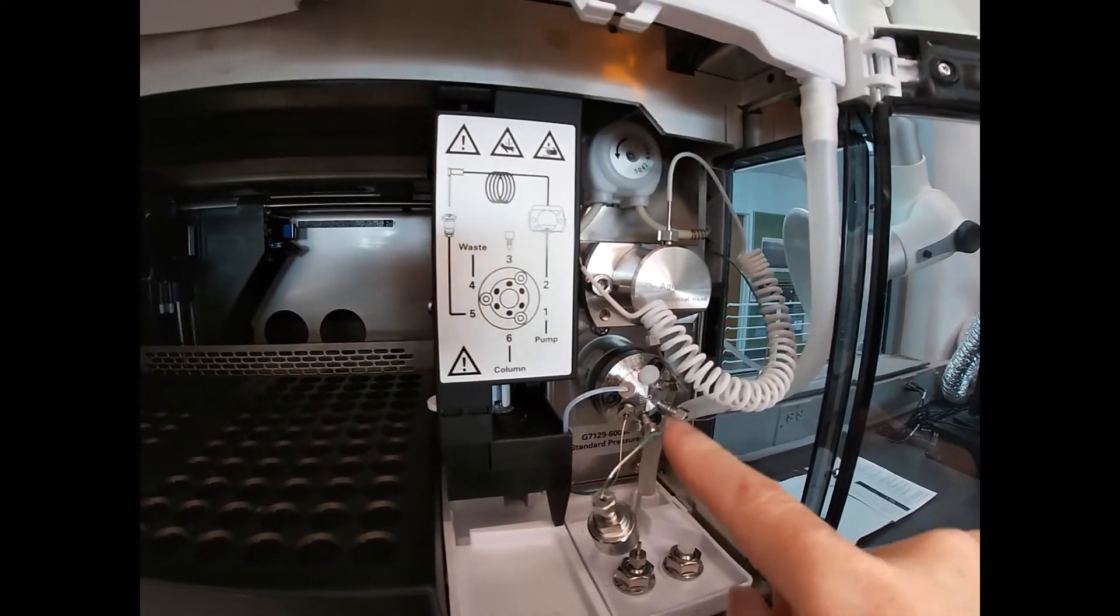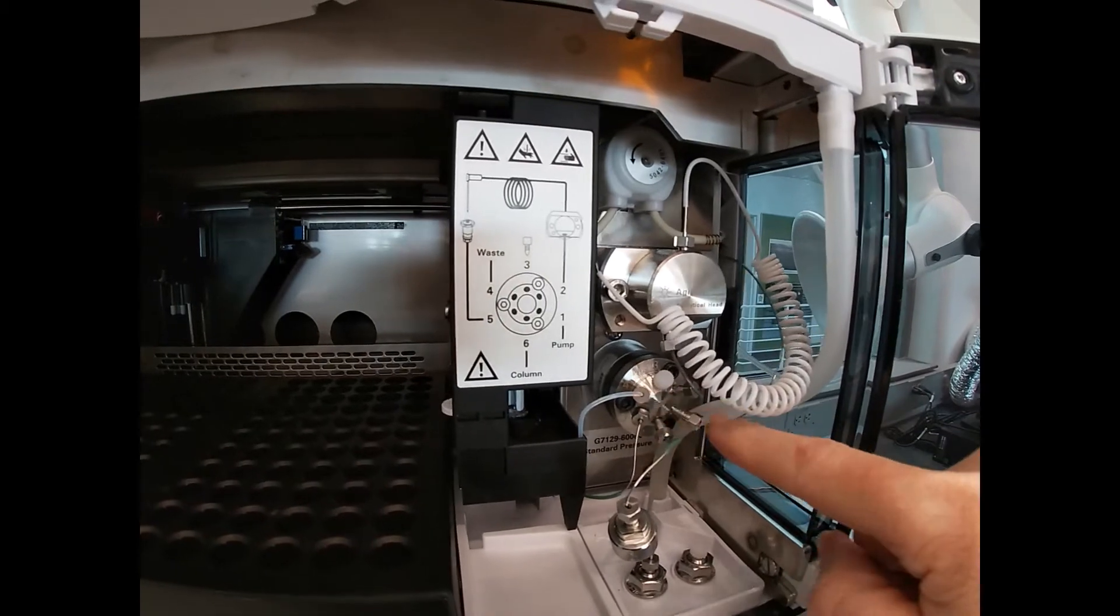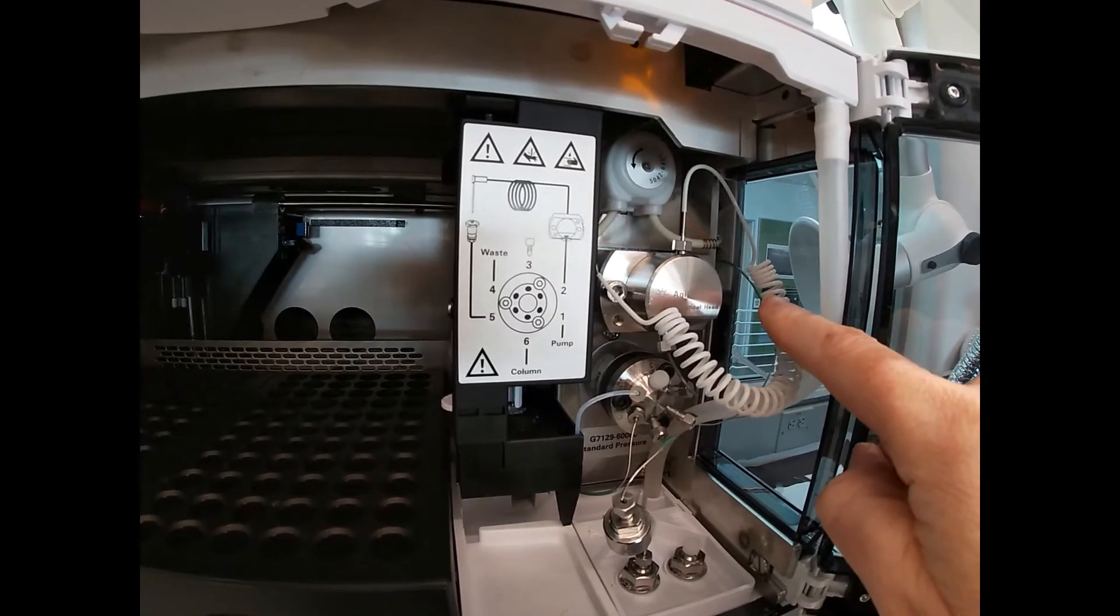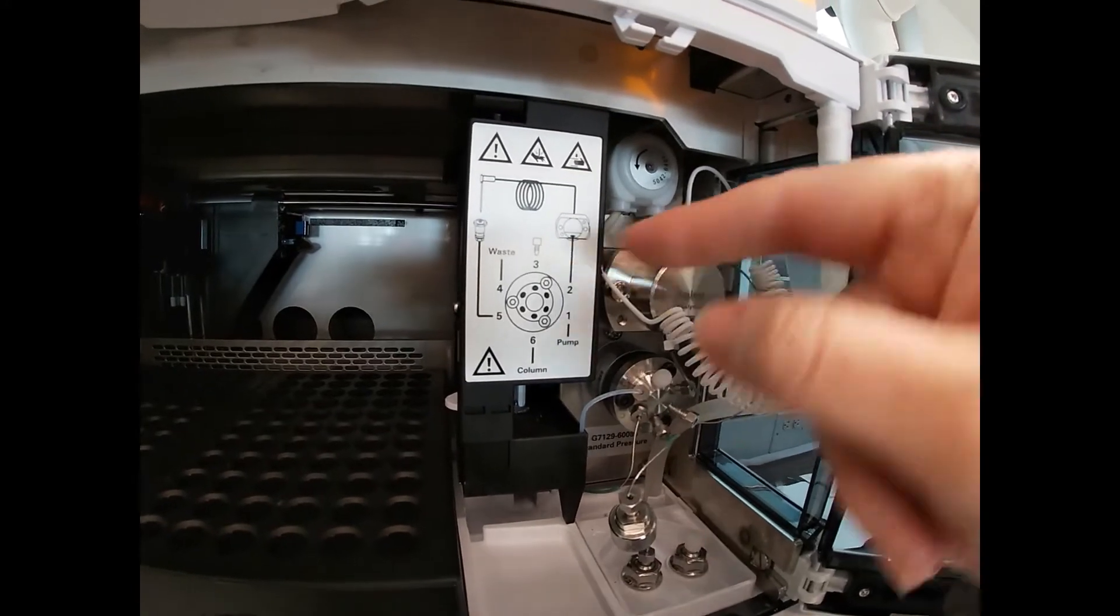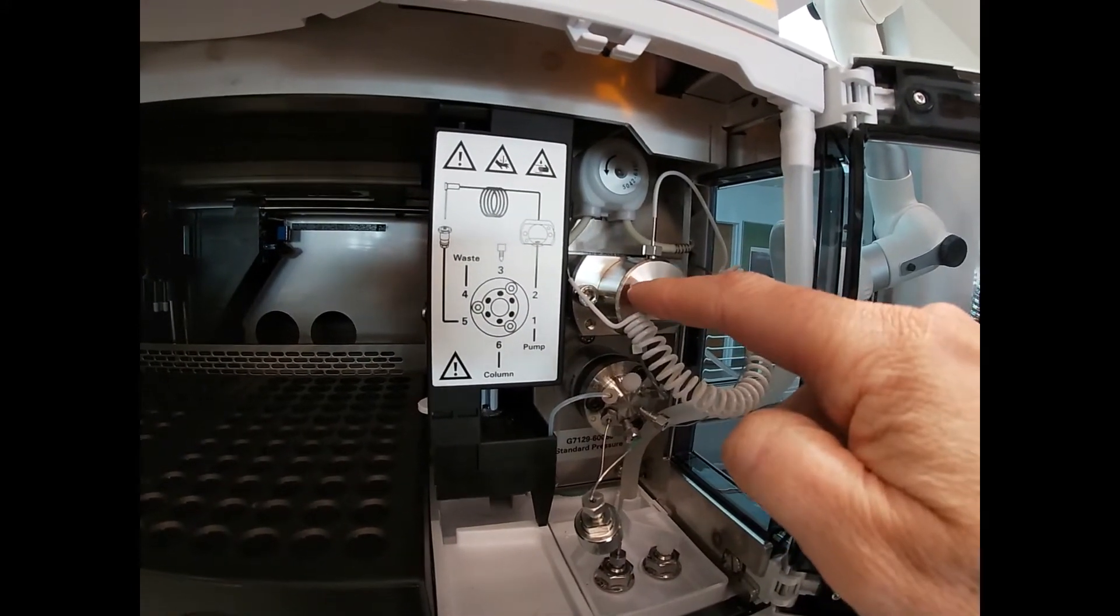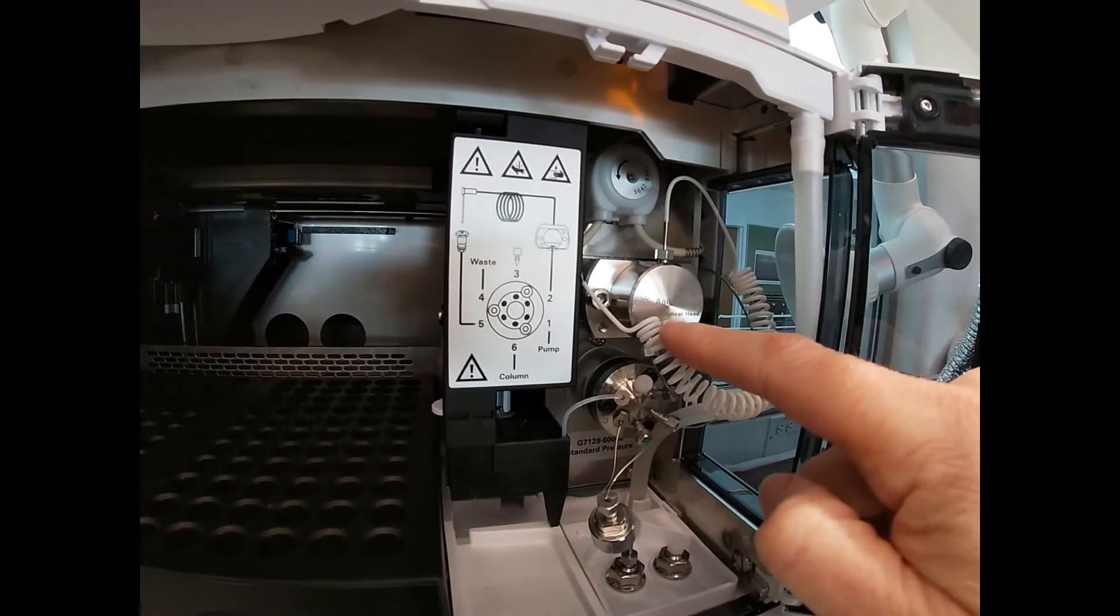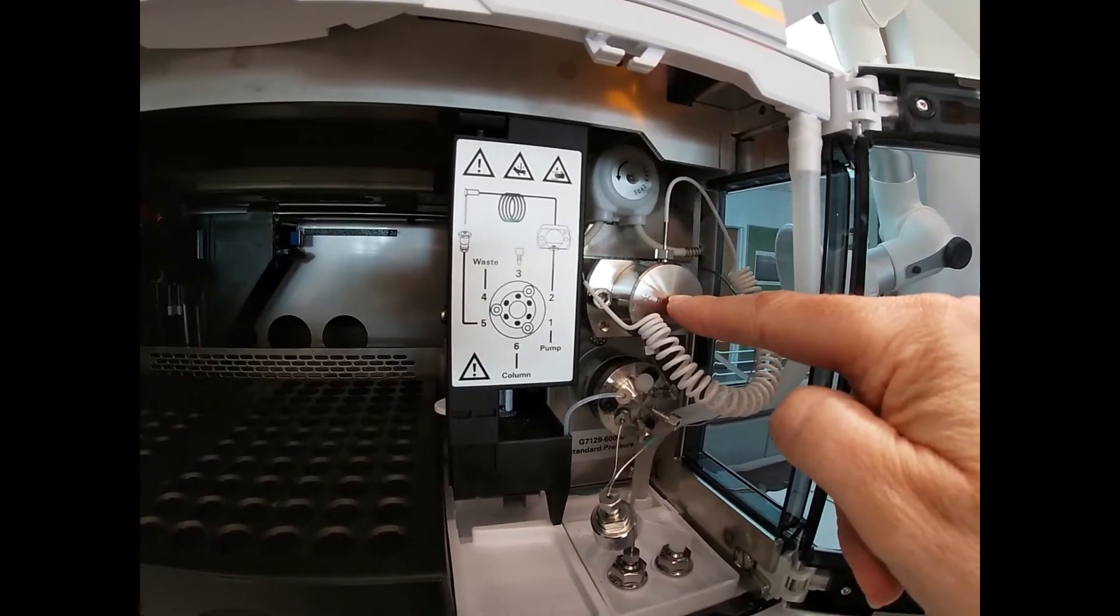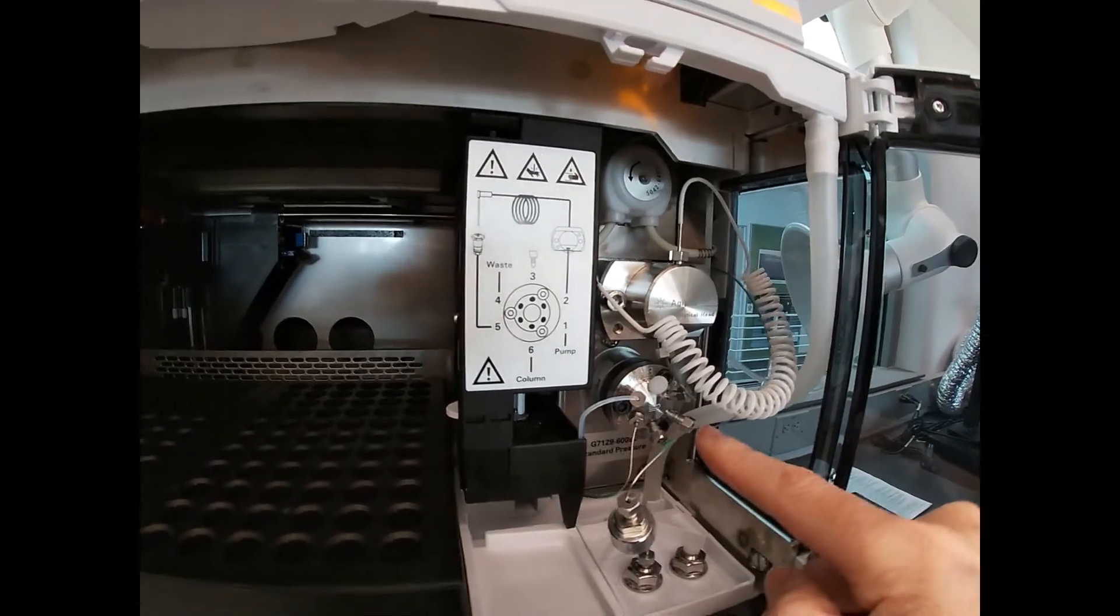The sample is flowing through—we have eluent that flows through—and when we're ready and we've filled our loop, this switches over so that we connect our pump line and our loop line, and it pushes everything out of the loop onto the column or into our flow line.